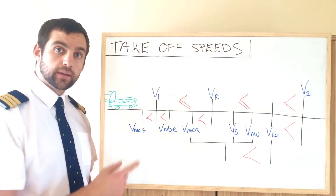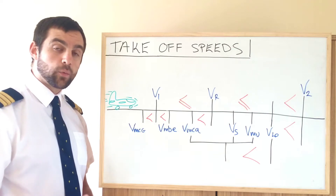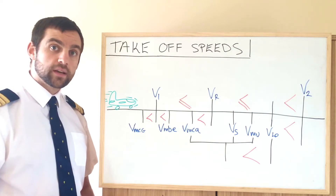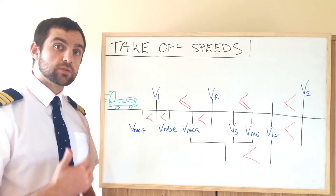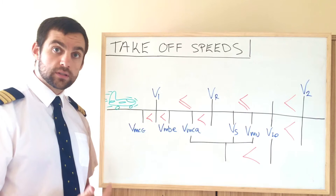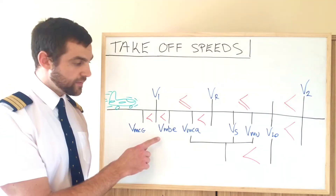V1, our next speed, is the decision speed. It's the speed at which we decide in a malfunction whether to go — continue the takeoff or reject the takeoff.